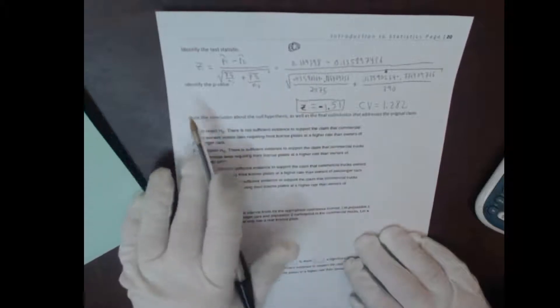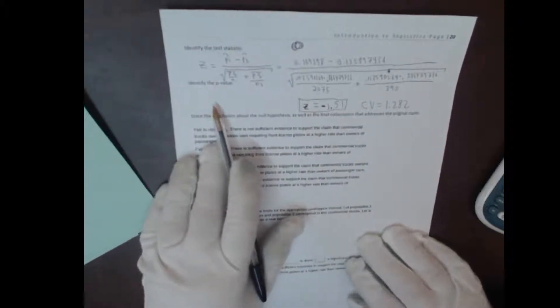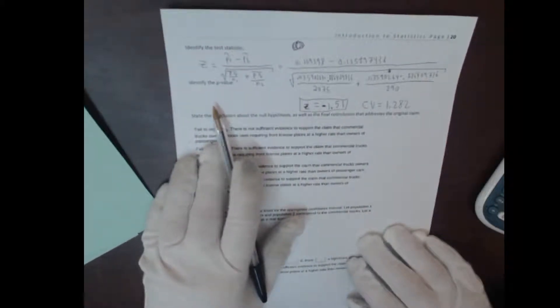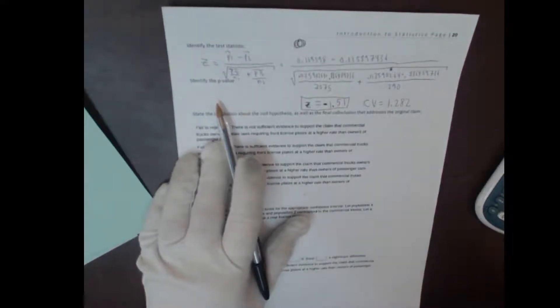Hopefully you remember that means we are going to reject the null hypothesis. So when we find our p-value, we should definitely get a value smaller than .10, which was alpha. Let's see if that happens.